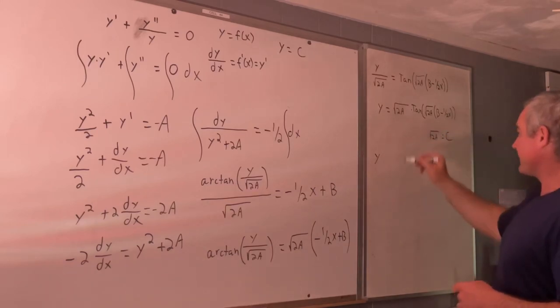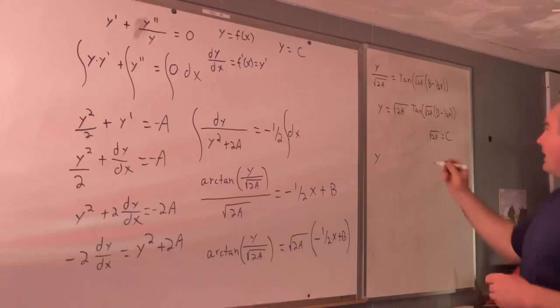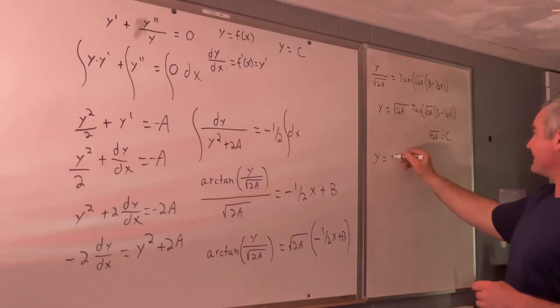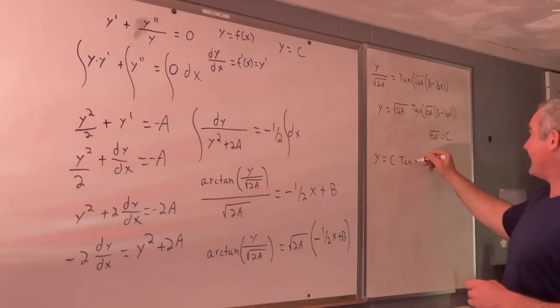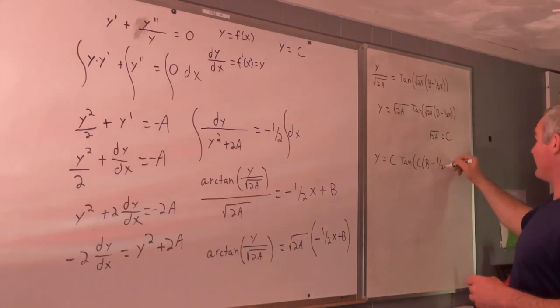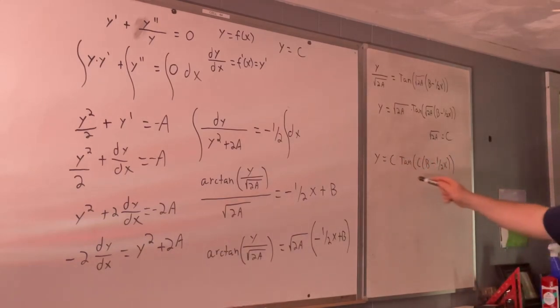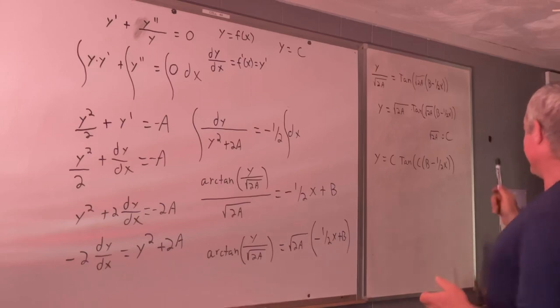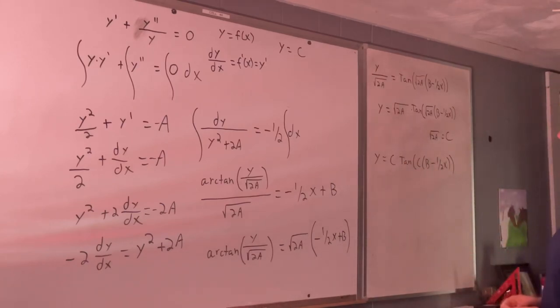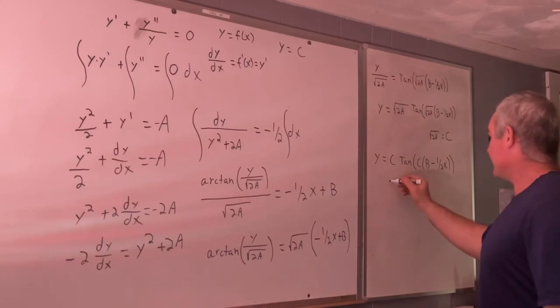y is equal to c tangent c times b minus one half x. And this checks out for all real values of c and b. Plug it into a graphing calculator yourself and check it out. This definitely works in conjunction with y is equal to c.